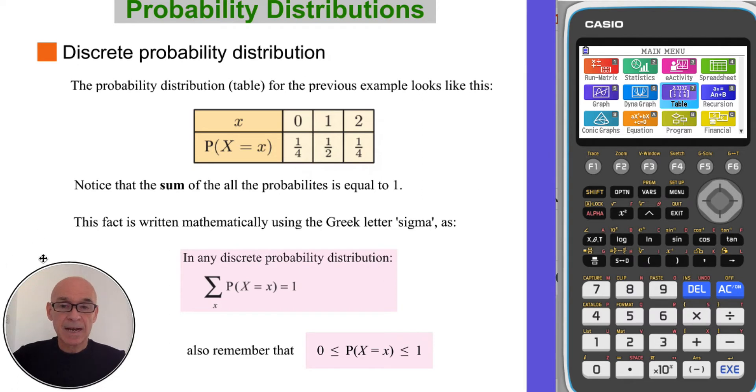Notice also, if you add the probabilities, a quarter plus a half plus a quarter, the sum is equal to 1. Okay, this fact is written mathematically using the Greek letter sigma, shown here. So the standing for sum. The sum of all the probabilities is equal to 1. Remember also that each individual probability must lie between 0 and 1.